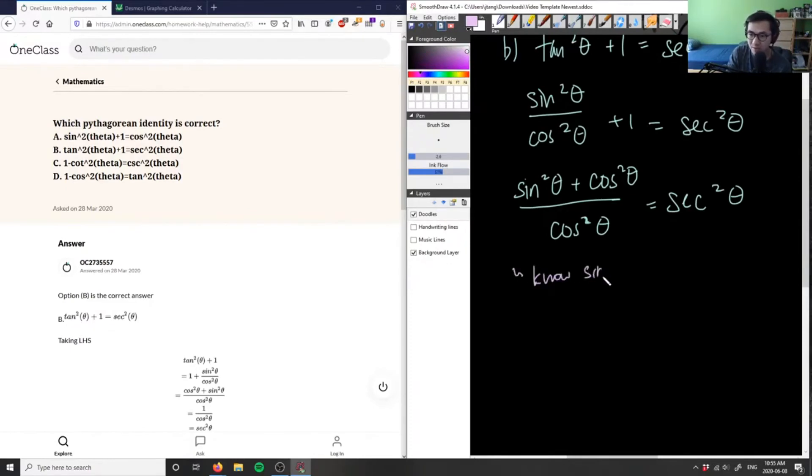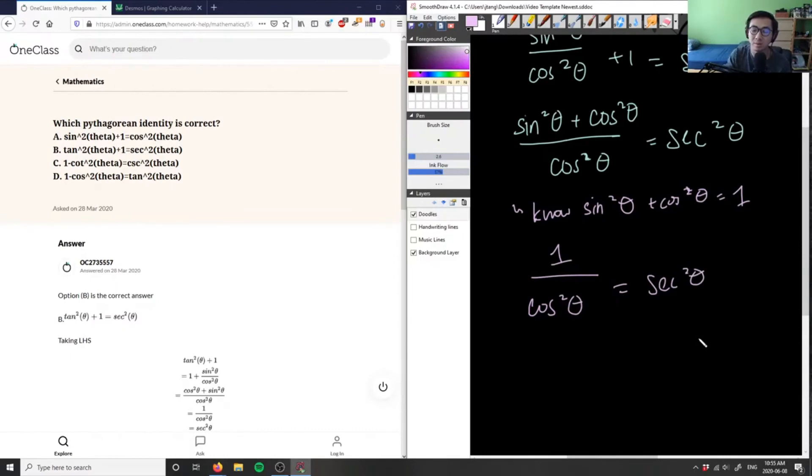Since sin²θ + cos²θ = 1, we're going to have 1 in the numerator over cos²θ, which equals sec²θ. And we know that sec²θ is simply 1/cos²θ.